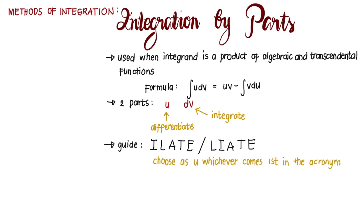So say for example, we are given a product between an algebraic and trigonometric. So which one should be set as U? Algebraic and trigonometric. So U should be algebraic.